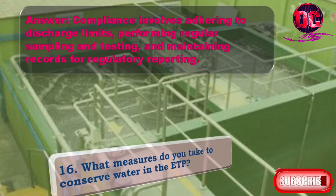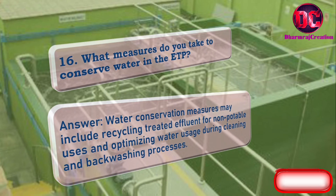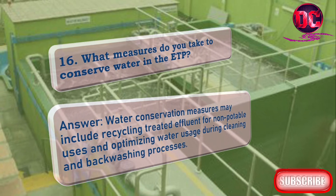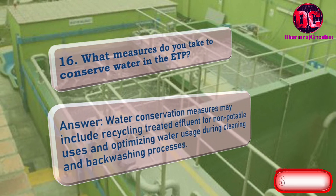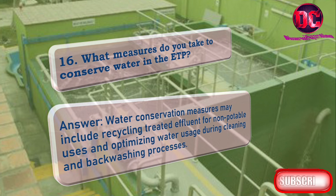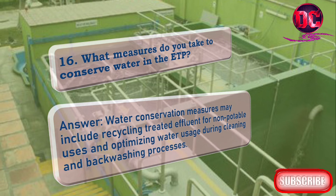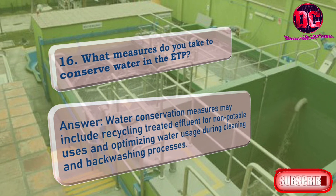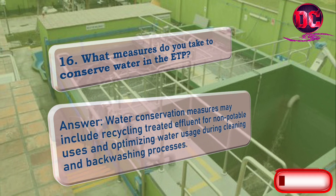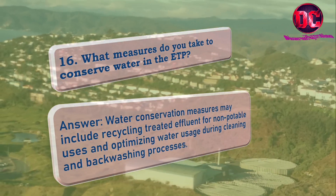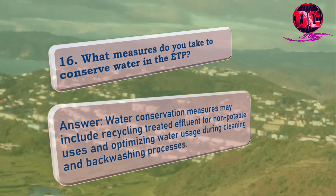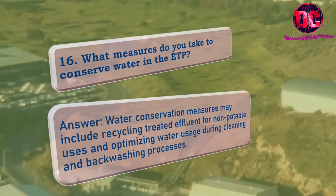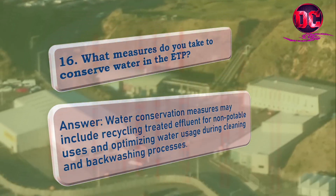16. What measures do you take to conserve water in the ETP? Answer: Water conservation measures may include recycling treated effluent for non-potable uses and optimizing water usage during cleaning and backwashing processes.